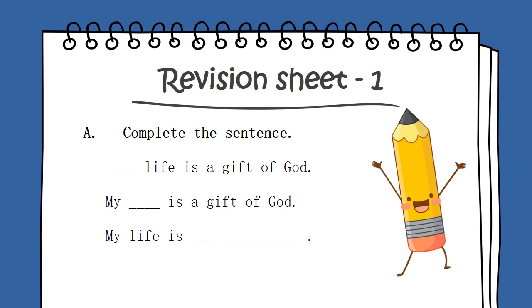Secondly, my dash is a gift of God. What is the gift of God? My life. Life. Yes, life is the answer. And how do we spell it? Life. Life is a gift of God. Third is, my life dash. My life what? Yes, my life is a gift of God. Let's move to the next question.